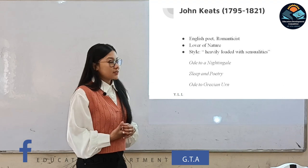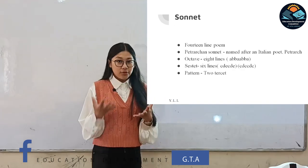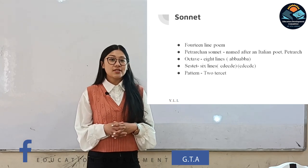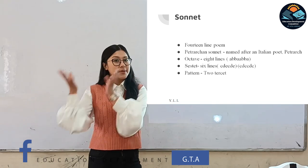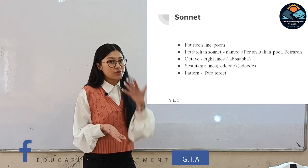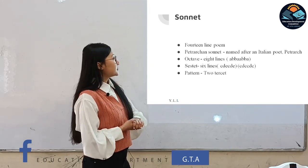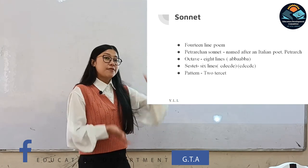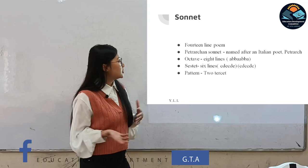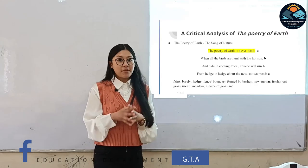He wrote several works, some of which are 'Ode to a Nightingale,' 'Sleep and Poetry,' and 'Ode to Grecian Urn.' 'The Poetry of Earth' is fashioned upon the sonnet form. A sonnet is a 14-line poem divided into two types: the Shakespearean sonnet and the Petrarchan sonnet. John Keats chose to write in the Petrarchan sonnet, named after the Italian poet Petrarch who initiated this style. A sonnet is divided into two parts: the octave — the first eight lines — and the sestet — the last six lines.